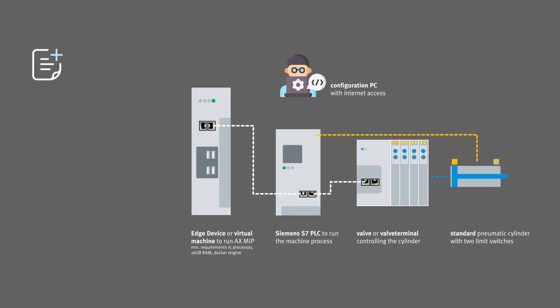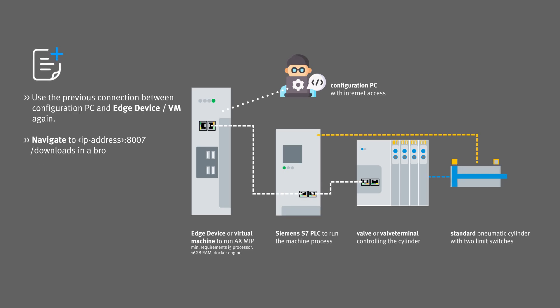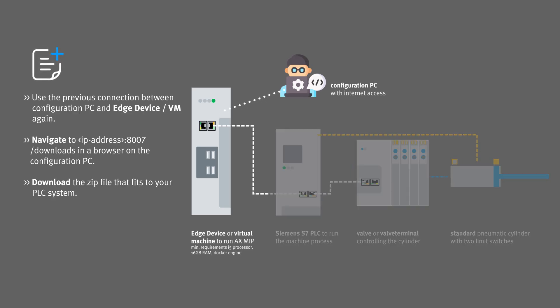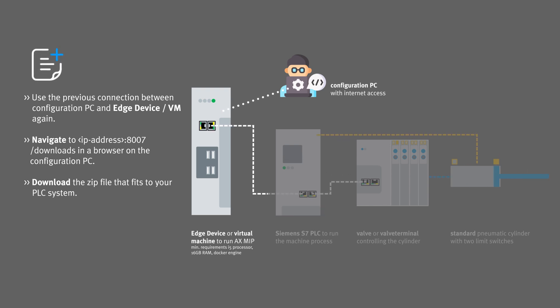To generate the data to analyze, you get a library from Festo that you need to add to your PLC program. It can be downloaded from the Docker application that you have installed previously.